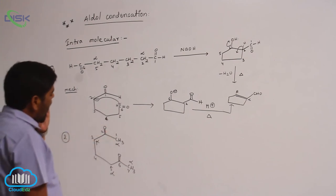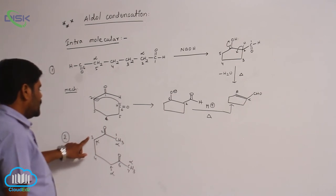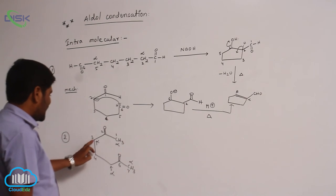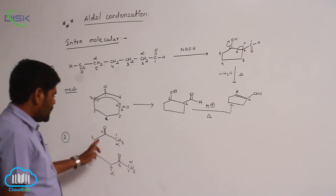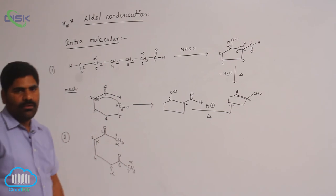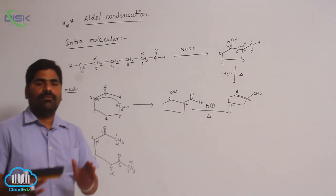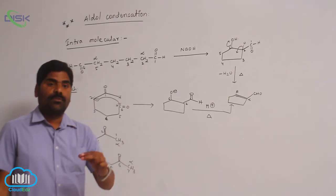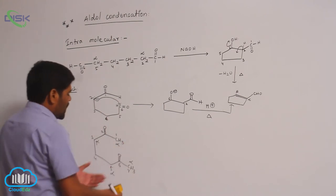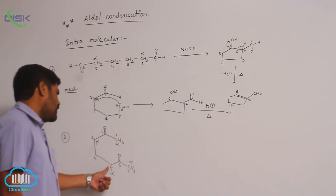If we take the third alpha carbon or the fifth alpha carbon — both are the same position — and a carbanion is generated there, it will attack this carbonyl carbon, giving 1, 2, 3, 4 — a 4-membered ring. Generally, 4-membered rings are unstable in organic chemistry. Five-membered and 6-membered rings are more stable, and 6-membered is more stable than 5-membered. Therefore, carbanion generation at the first carbon or seventh carbon is more favorable than at the fifth or third carbon.